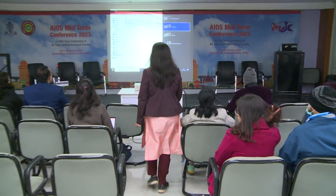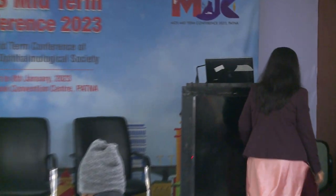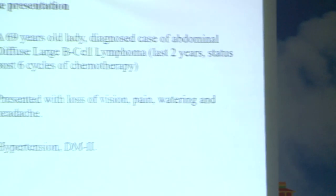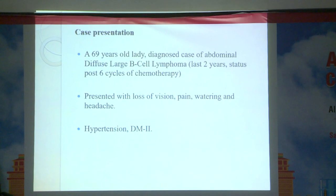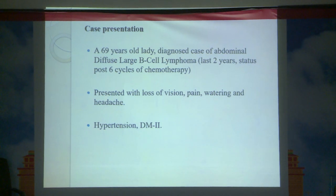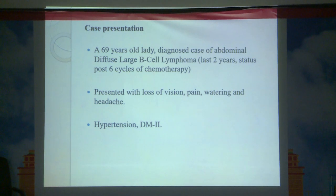Next is Dr. Sanchari Chakravarti, secondary DNB resident in Sri Shankaradev Nethralaya, Assam, presenting a case of intraocular metastasis in a known case of diffuse large B-cell lymphoma of the abdomen. This 69-year-old lady was earlier diagnosed with abdominal diffuse large B-cell lymphoma for the last two years and had undergone six cycles of chemotherapy. She also had comorbidities of hypertension and type 2 diabetes mellitus. She presented with loss of vision, pain, watering and headache.